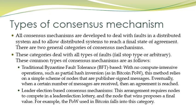The second type is leader election based consensus mechanism. This arrangement requires nodes to compete in a leader election or lottery. The node that wins the election proposes a final value, and that value becomes the final state of the system. All participant nodes agree on the state proposed by the winning node. For example, the Proof of Work used in Bitcoin falls into this category.